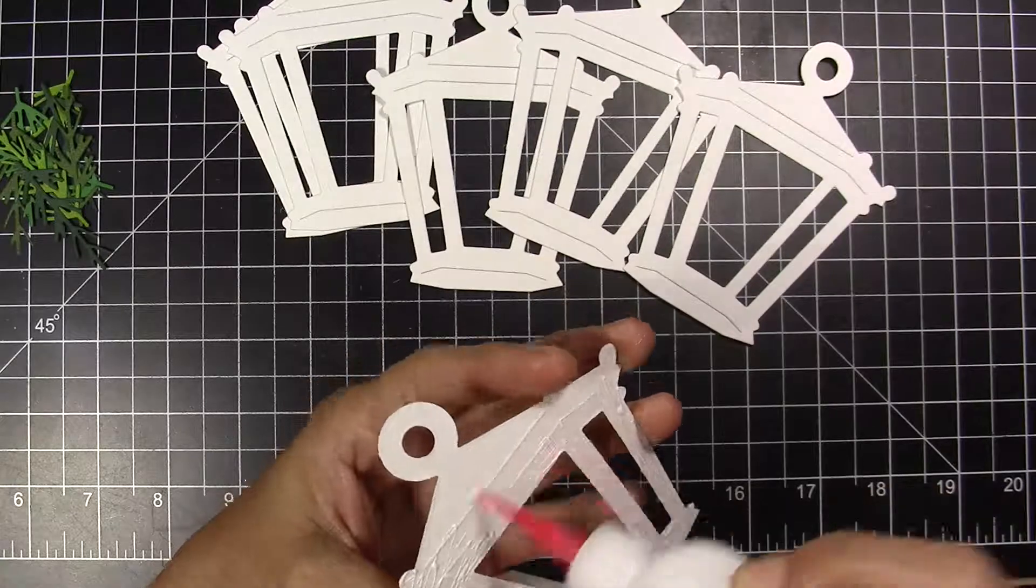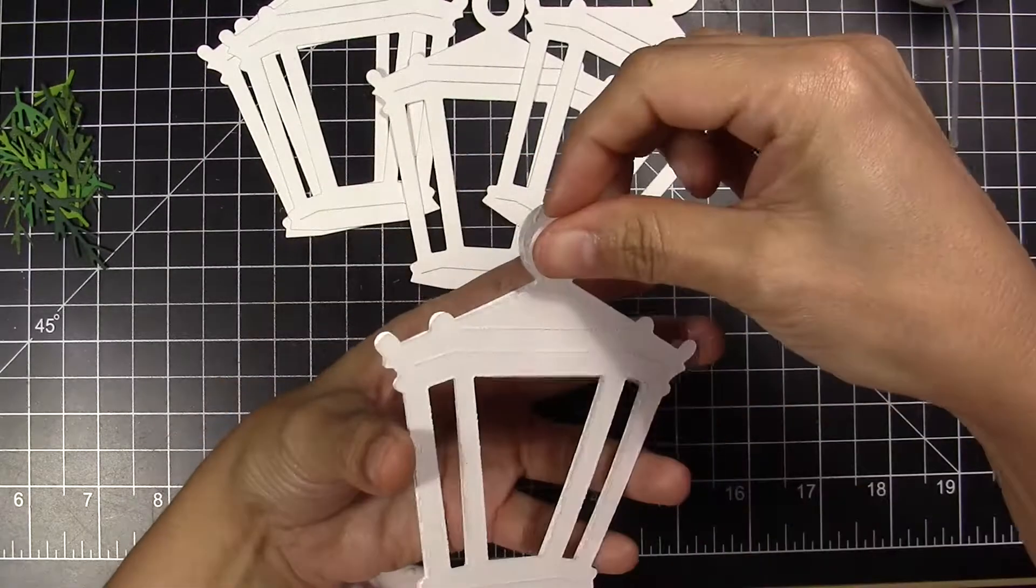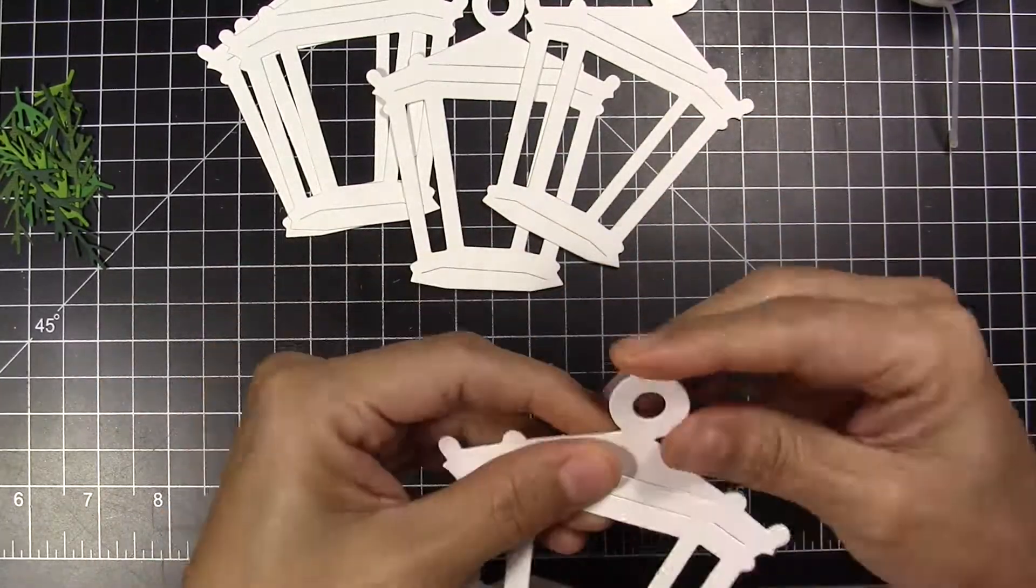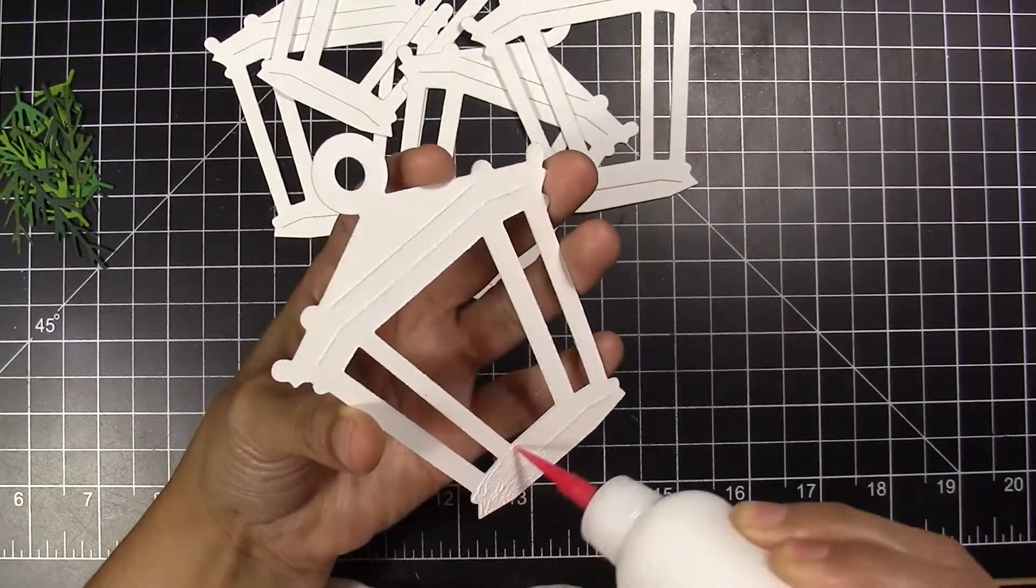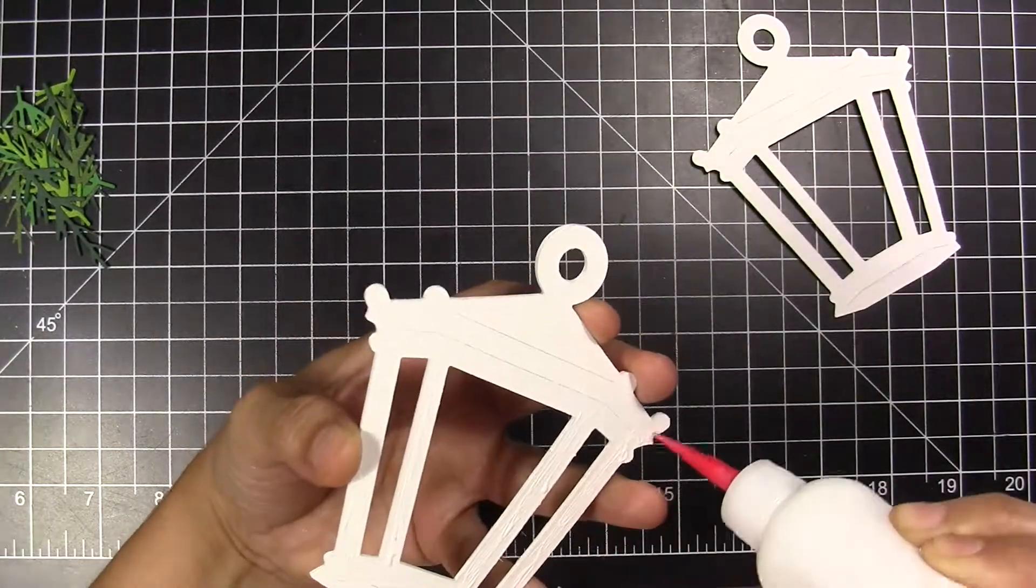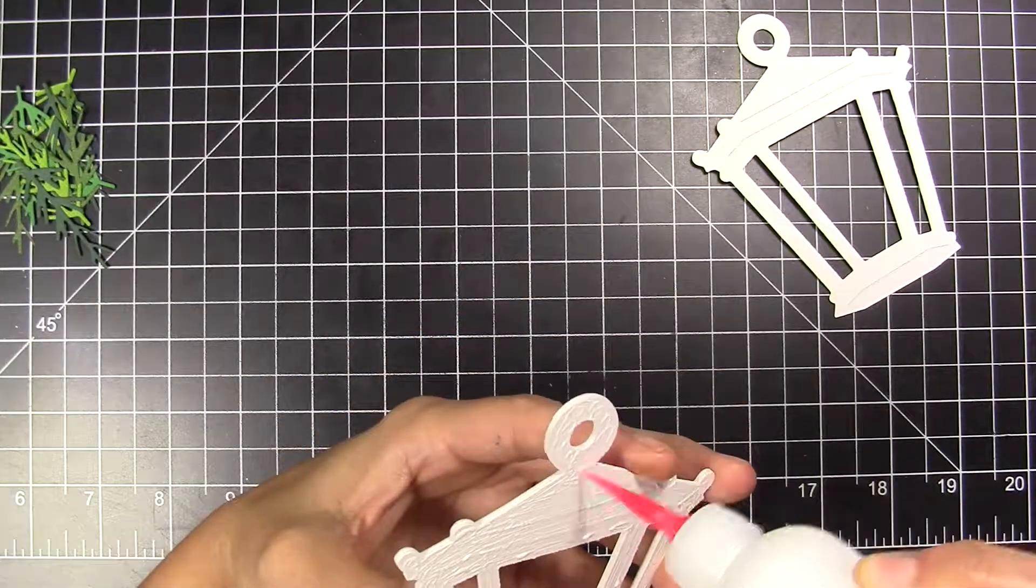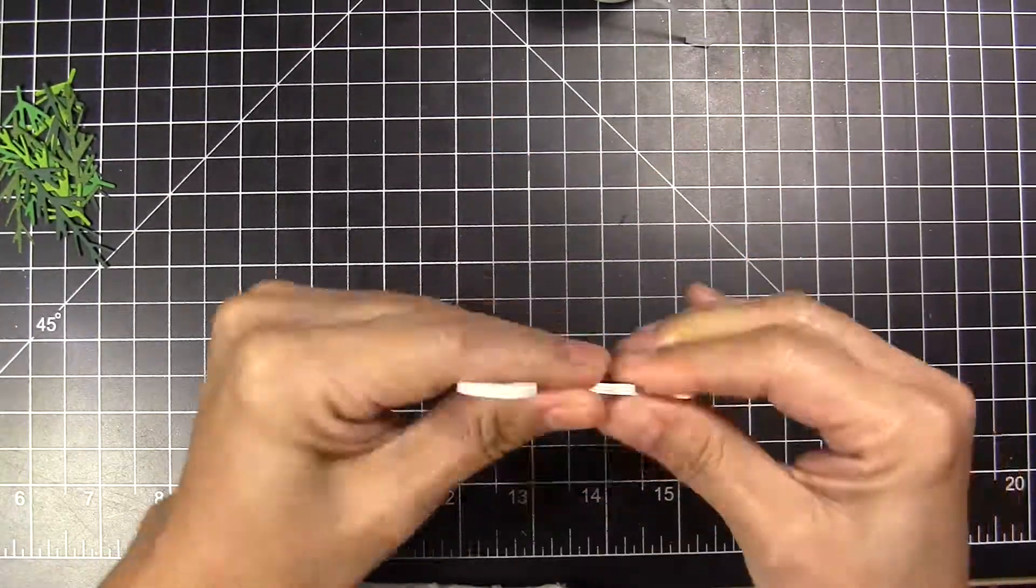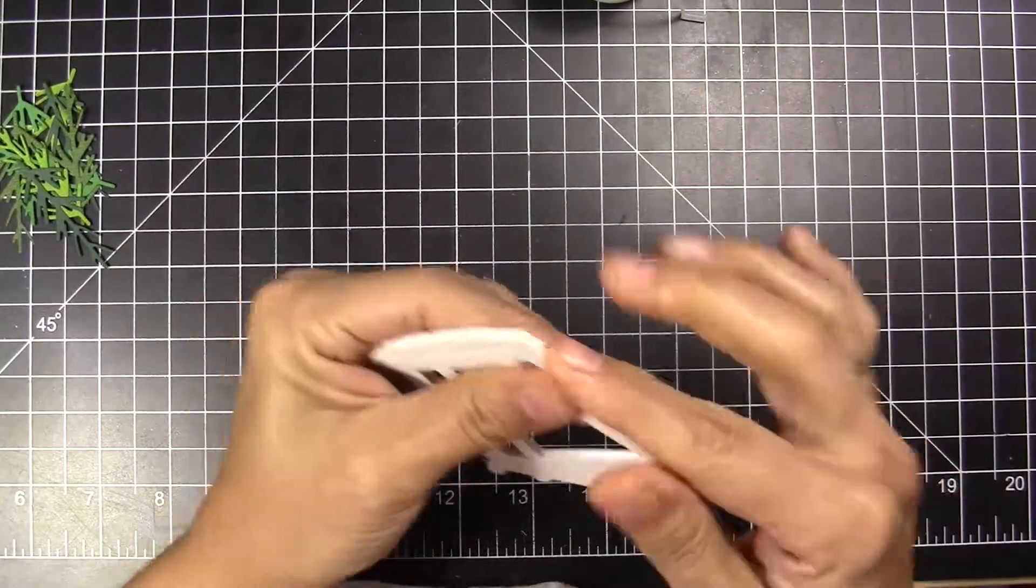I was thinking to make this card a shaker card—well, just a part of the lamp to be a shaker—but I didn't find any element to put inside to be like sparkling. Because inside is going to have a candle, I let it in a simple way. I just put the candle inside; I didn't do the shaker element. I press very well the paper together to make them look like it's just one piece.